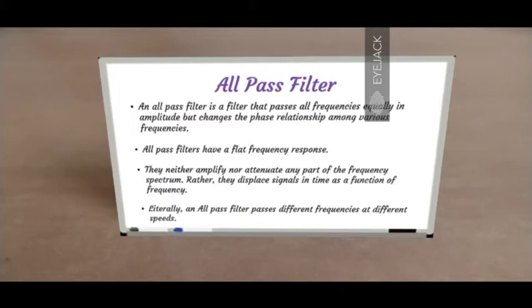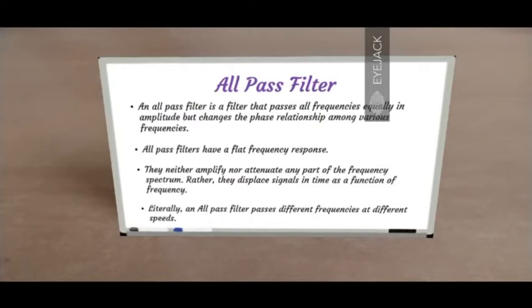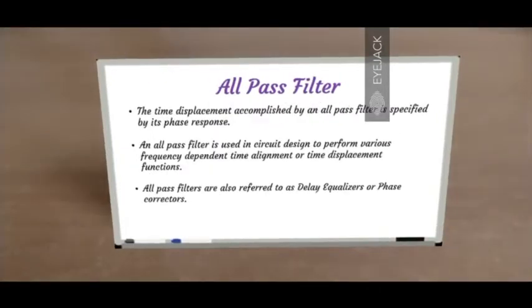The all-pass filter does pass all the frequencies equally in amplitude, but does change the phase relationship among various frequencies. This makes a drastic change. So all-pass filters have a flat frequency response — they pass all the frequencies equally in amplitude. They neither amplify nor attenuate any part of the frequency spectrum, but rather they displace signals in time as a function of frequency. Literally, an all-pass filter just passes different frequencies at different speeds.